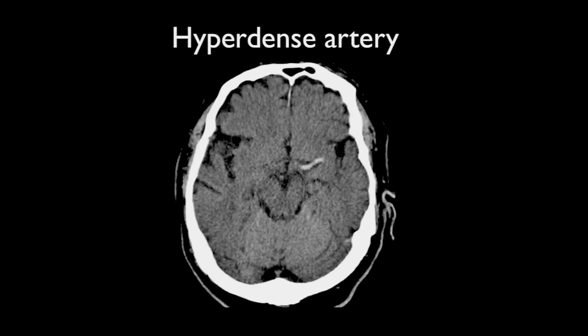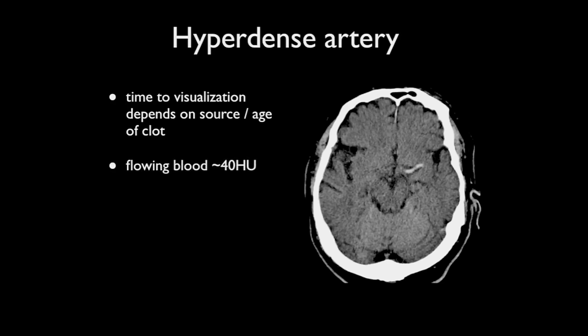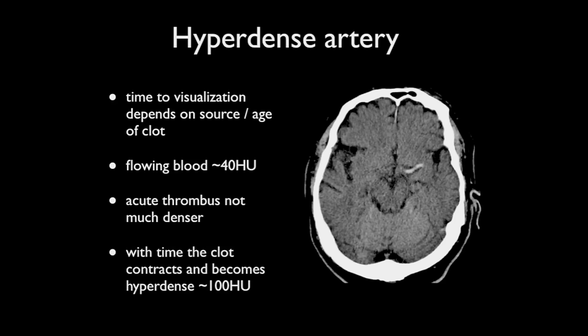The hyperdense artery sign is a well-known sign on non-contrast CT scanning and represents direct visualization of the clot within the lumen of the occluded artery. It relies on the fact that clot is hyperdense compared to normal flowing blood, however this depends on the age of the thromboembolism. Flowing blood typically has a density of approximately 40 Hounsfield units, though this varies with hematocrit and hydration. Acute thrombus is not significantly denser than this, but with time it becomes progressively more hyperdense, reaching densities of up to 100 Hounsfield units.